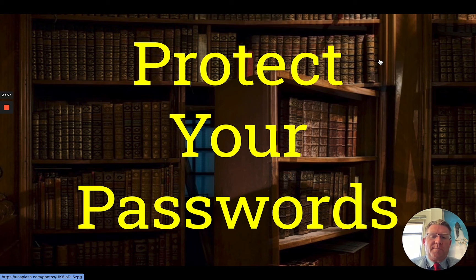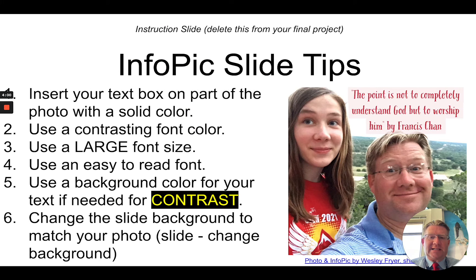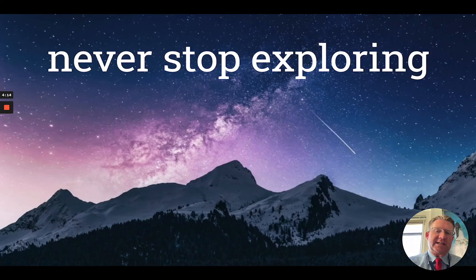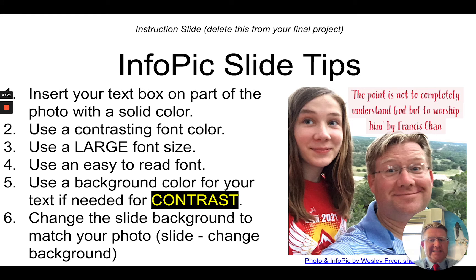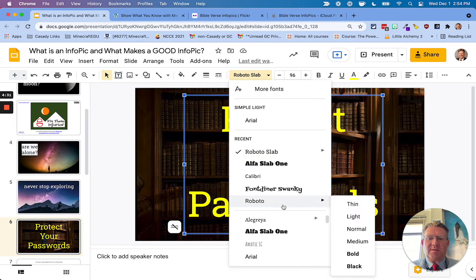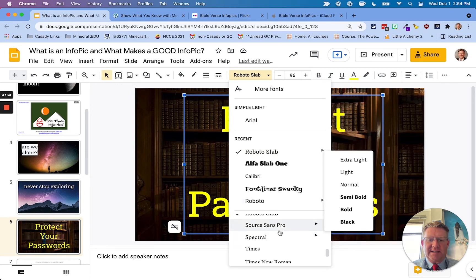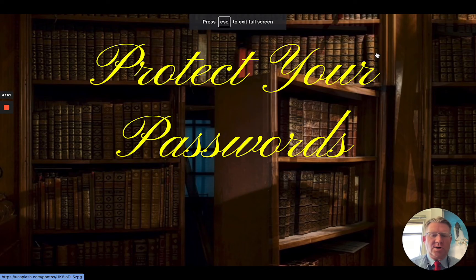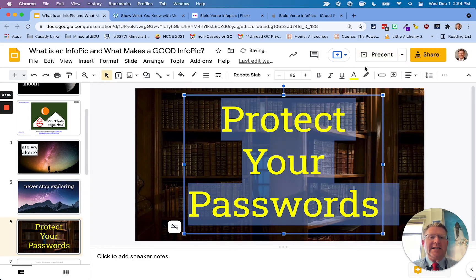As you make your own InfoPics, make sure that you don't use too much text. Here are a few tips: use your text box and insert it on part of the photo that has a solid color. Sometimes you can't — if the photo is really dark, you won't have to. But this is an example of where I moved the text box to that darker part of the sky that didn't have a lot of things competing in the background. Use a contrasting color for your font, a large font size, and pick an easy-to-read font. A bad example would be something like a super fancy script — that is not going to be nearly as easy to read. You want your InfoPics to communicate well and easily with people.